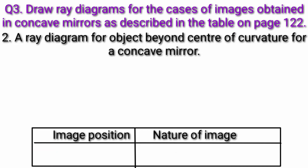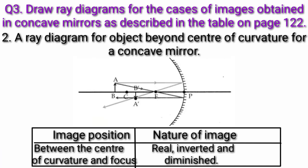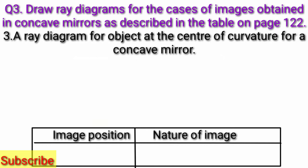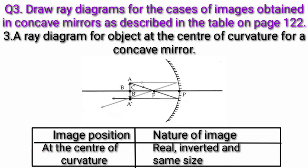Second, ray diagram for object beyond center of curvature for a concave mirror — image position between center of curvature and focus; nature of image: real, inverted and diminished. Third, ray diagram for object at the center of curvature for a concave mirror — image position at the center of curvature; nature of image: real, inverted and same size.